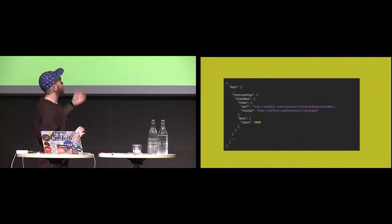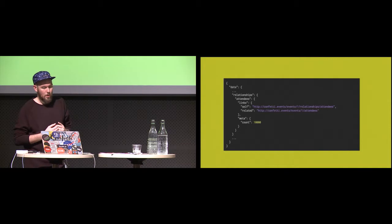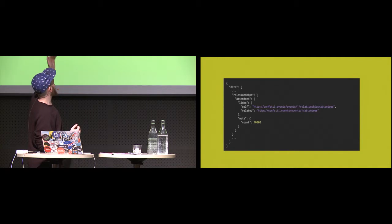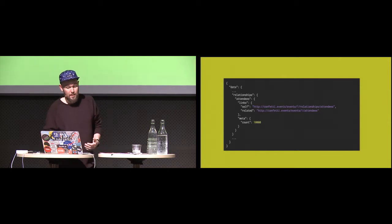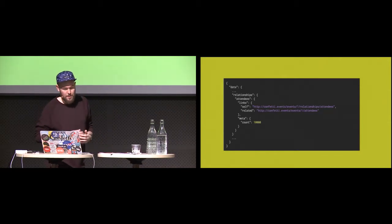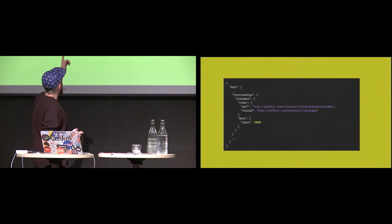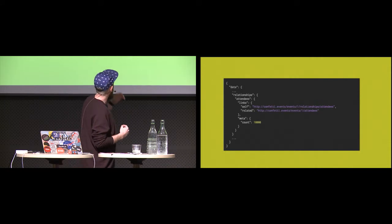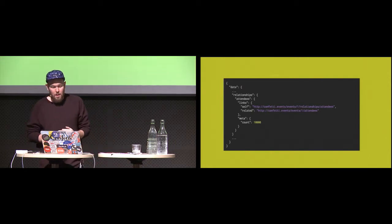We also have a 'self' link, which just links back to itself — where you can go fetch all the links to the attendees. For instance, if we had lots of attendees — more than we can return references to — we can instead just point you to a link and say 'we don't give them to you here, but you can fetch them at this link.' We also added some metadata; in this case a count of how many there are. Metadata can be used for anything specific to your API.